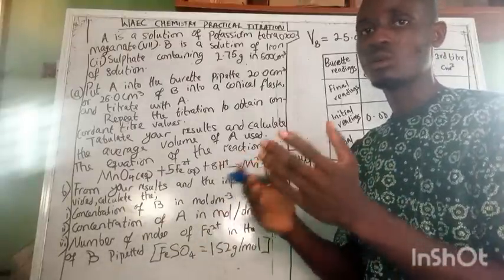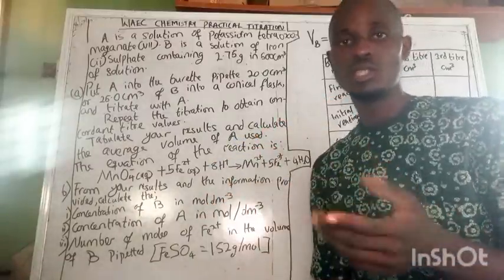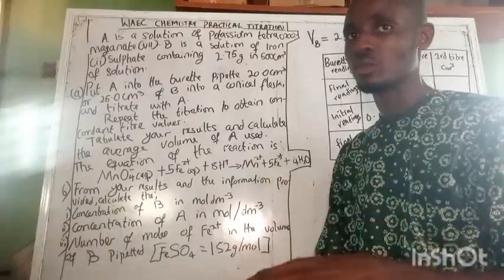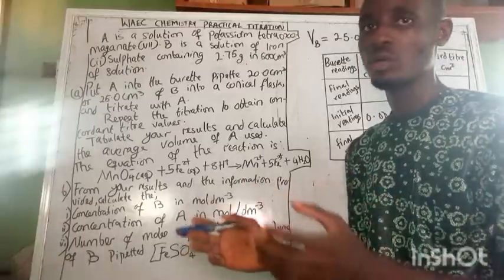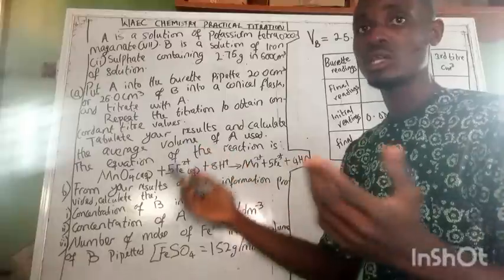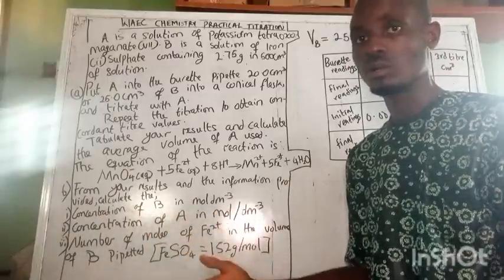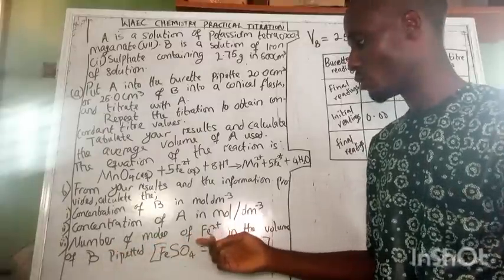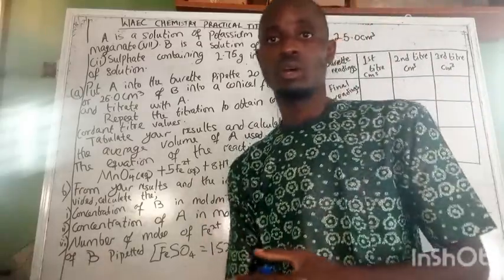We repeat the titration to get concordant titre values — values that are closer to each other — to give assurance that the specific volume required to titrate the given volume of B is accurate. After the experiment, we use our results to calculate the concentration of B, the concentration of A in mol/dm³, and the number of moles of Fe in the volume of B that was pipetted.